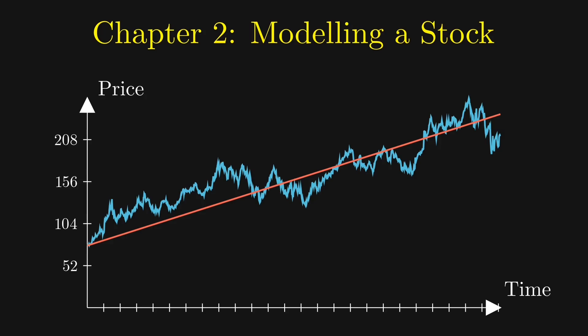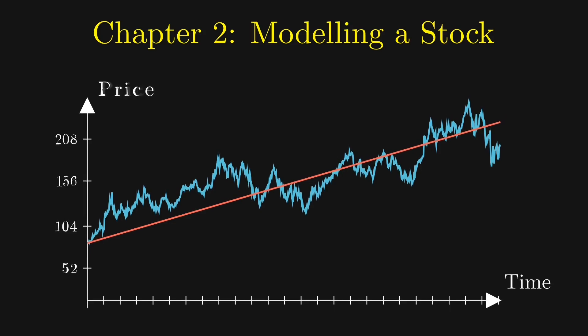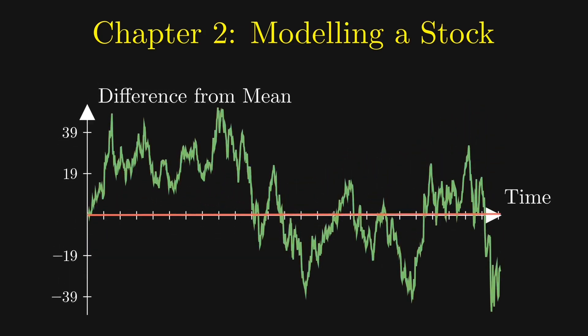Let's investigate the randomness by taking away the drift. We set the starting point as zero and only plot the difference from the mean. Now the stock wiggles around the horizontal axis.